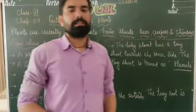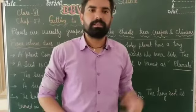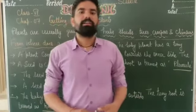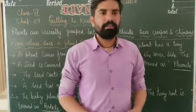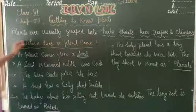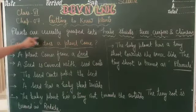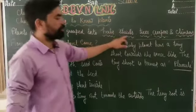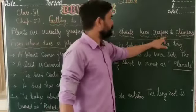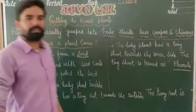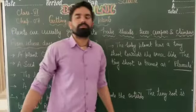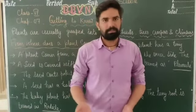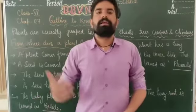In Chapter 7 — Getting to Know Plants — हमें plants के बारे में जानना है, plants की classification क्या होती है, उनके बारे में पढ़ेंगे। Plants are usually grouped into herbs, shrubs, trees, creepers, and climbers. Generally, our school has many different varieties of plants.